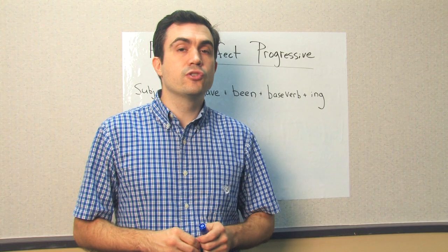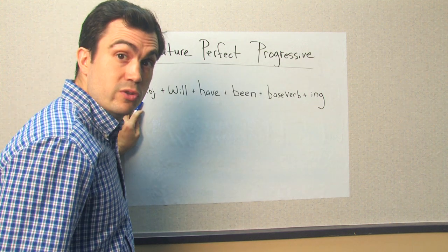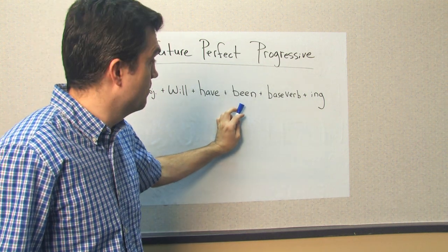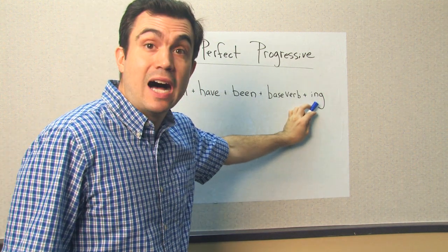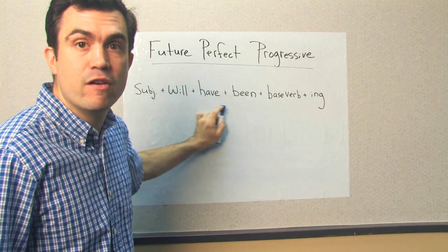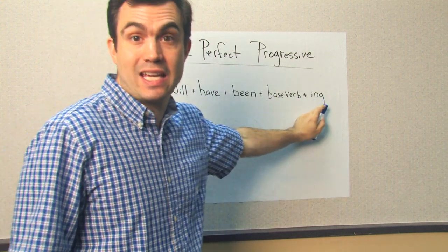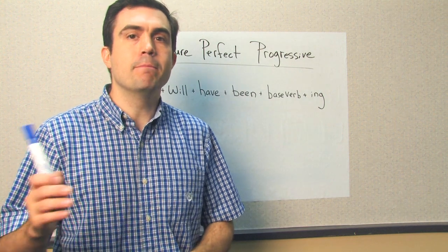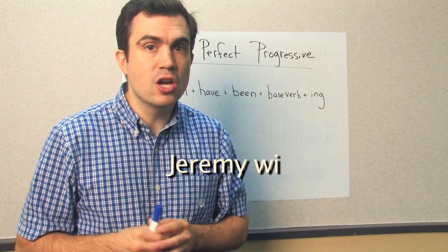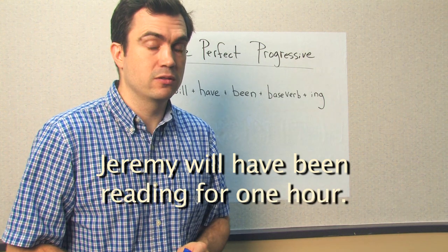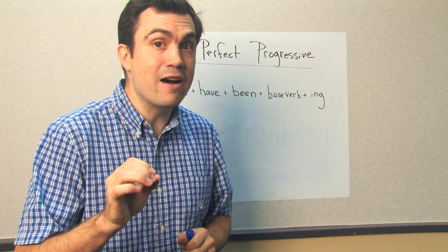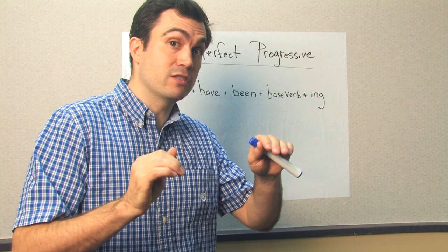Future perfect progressive. We use the subject, plus 'will,' plus 'have,' plus 'been,' plus the base verb, plus 'ing.' We never use 'has' with the future perfect progressive — always 'have.' Will have been, base verb, ing.